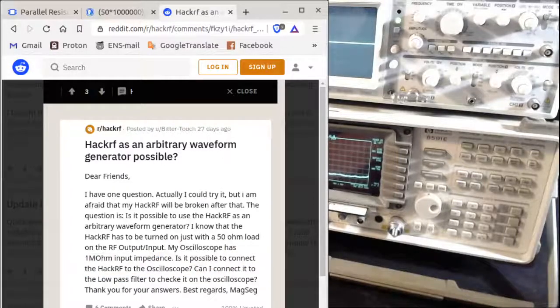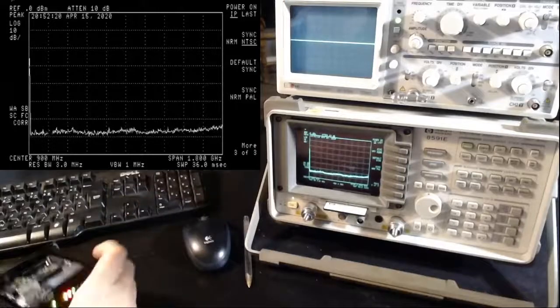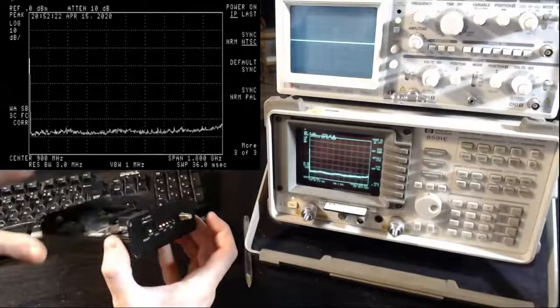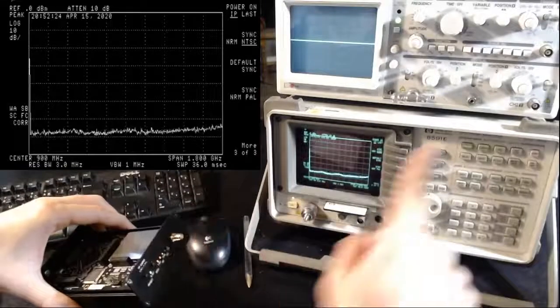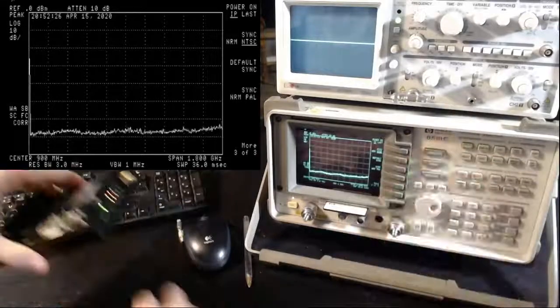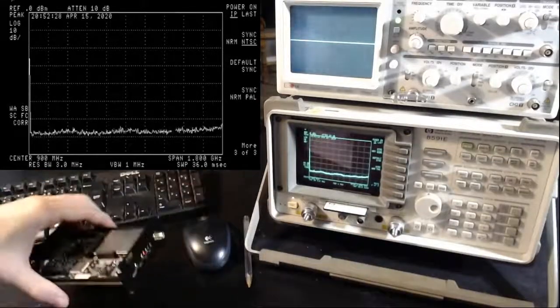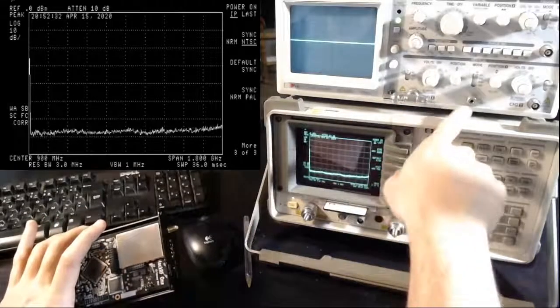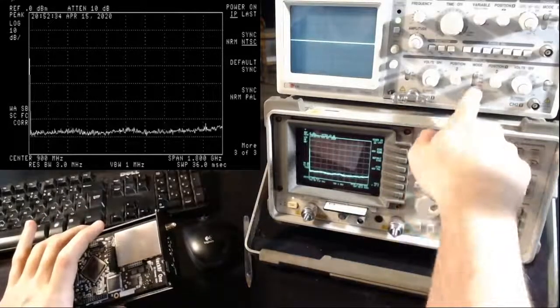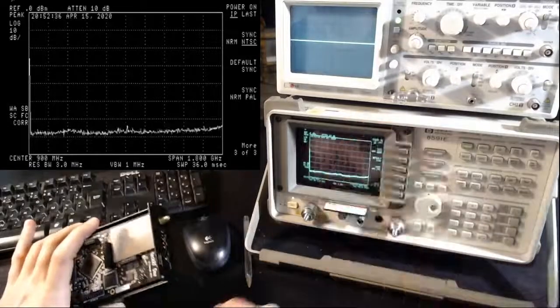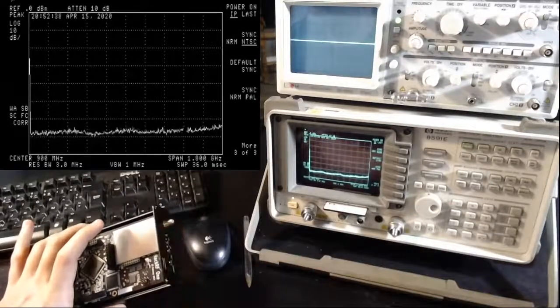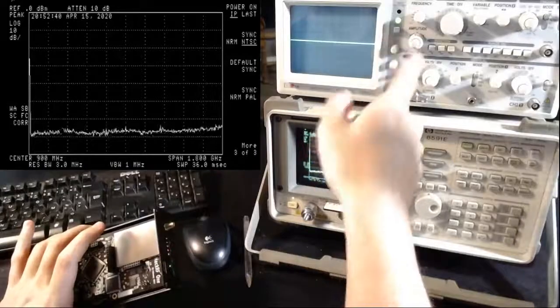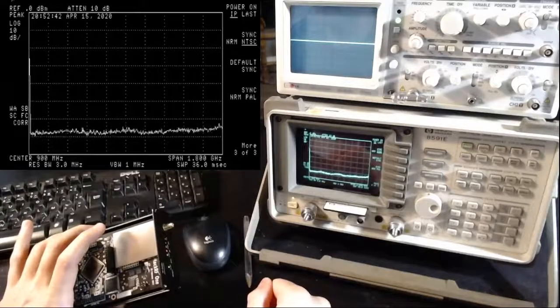So indeed, that's a good question. If you connect the HackRF directly to the input of an oscilloscope, indeed most oscilloscopes have an input impedance of 1 megaohm. Instead, the HackRF expects an input impedance on the load of 50 ohms.